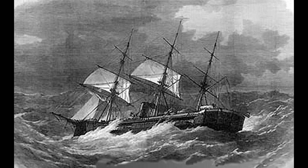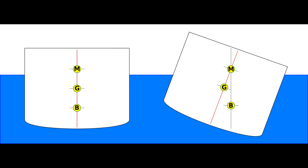This involves three key concepts that can appear counterintuitive: the center of gravity, the center of buoyancy, and the metacentric height. The center of gravity is the point within the ship about which the ship will rotate when forces such as wind or waves are exerted on it. The center of buoyancy is the center of mass for the volume of water displaced by the ship. In a normal condition, the center of buoyancy will be below the center of gravity.